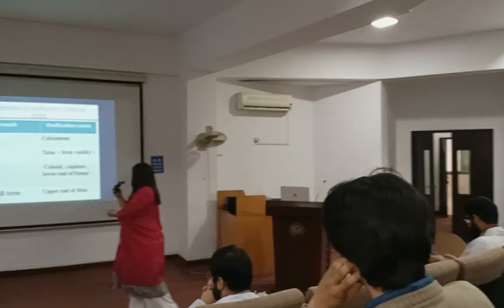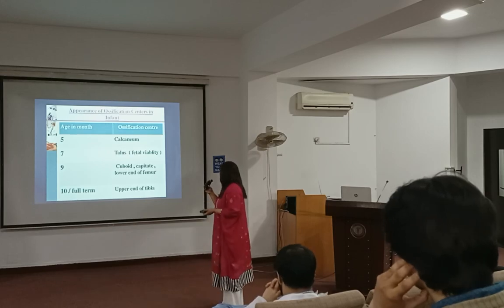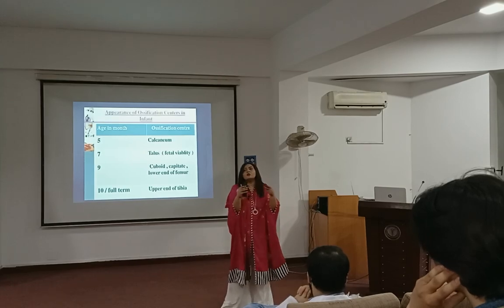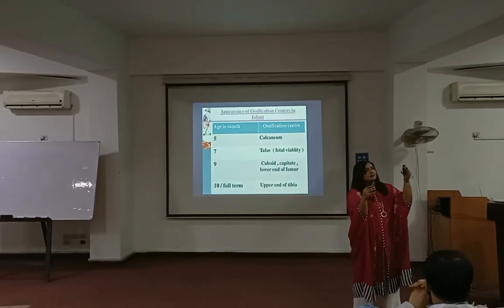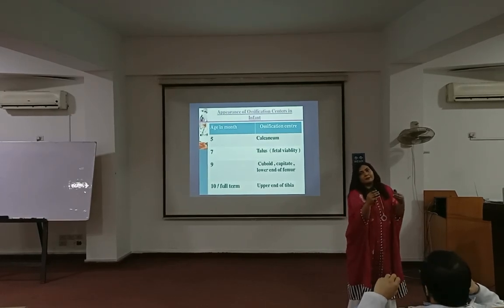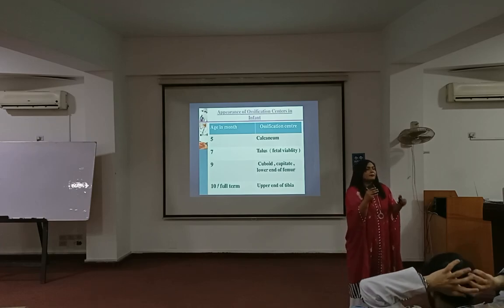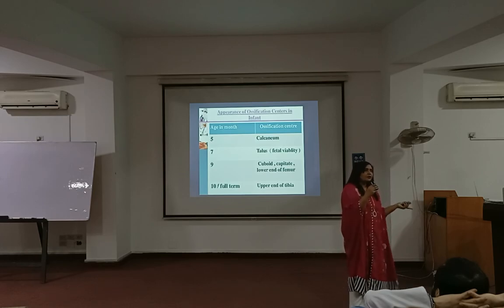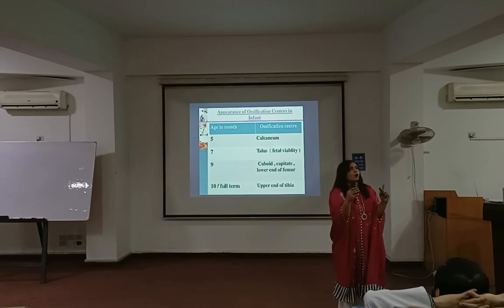At nine months, the ossification centers are present in the cuboid, capitate, lower end of the femur, and upper end of the tibia. To summarize: calcaneum at five months, talus at seven months, lower end of the femur and upper end of the tibia toward the end — these help decide maturity. When the ossification center appears in the talus, you determine the viability of the fetus.